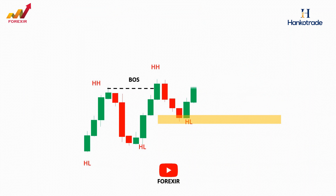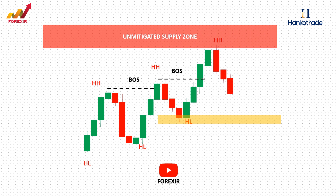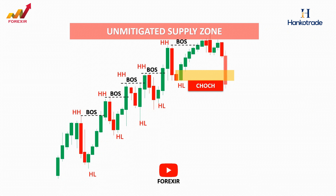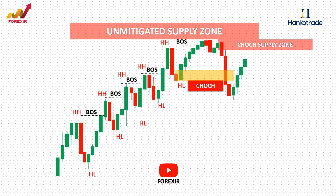There is an essential pro tip to always remember. A change of character is considered valid only under one condition: when the price has reversed and originated from a supply or demand zone before breaking the recent market structure and creating the change of character. If the price creates a change of character without interacting with a supply or demand zone, even if there is a valid candlestick pattern, it cannot be considered a valid change of character. The presence of a supply or demand zone prior to the change is a crucial factor in determining the validity of this shift in market direction. For instance, let's consider a bullish market where the price establishes a series of higher highs and higher lows. As illustrated here, the price creates this change of character after interacting with the higher time frame supply zone. The next crucial step is to examine whether the price closes below this higher low by the body of a bearish candle. If our candlestick pattern is valid and meets the necessary criteria, we can reasonably assume that the price intends to alter its direction and the change of character is a reliable trading signal.